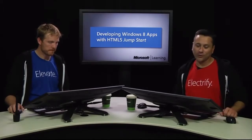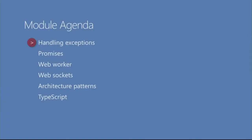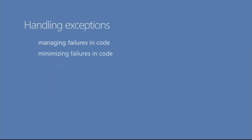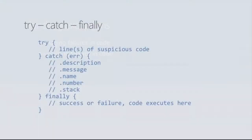Let's dive into what we're going to be doing with our module. It's going to start off with handling exceptions, and then we're going to get into a whole bunch of other cool things that Jeremy is going to get into in greater detail. With regard to all this error handling stuff, when we're talking about handling exceptions, we're talking about managing failures in code, and we're also talking about minimizing those failures in code. Managing them is different than minimizing them, and I'd like to talk about both.